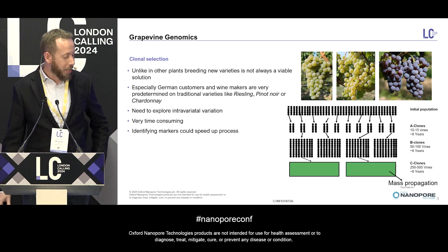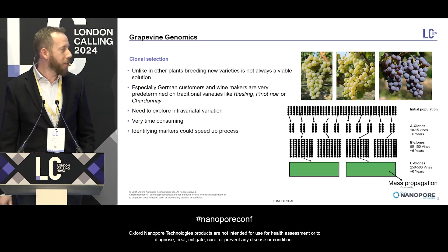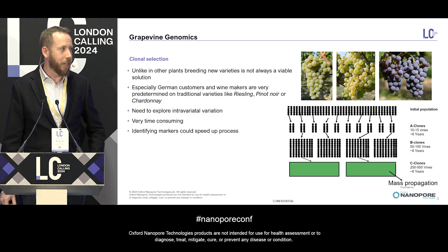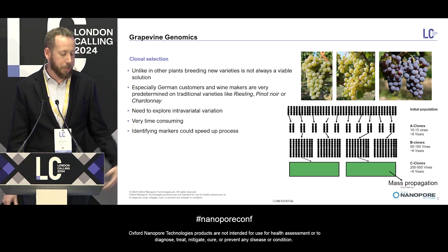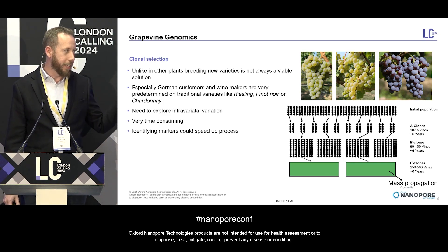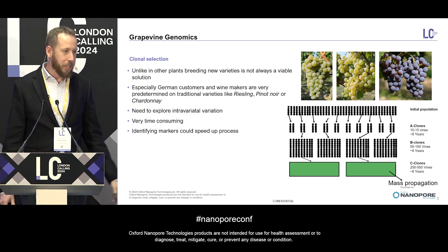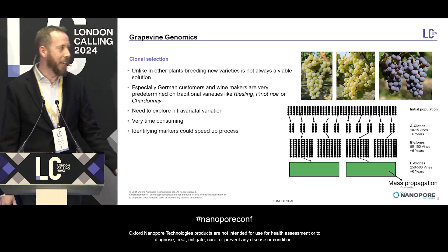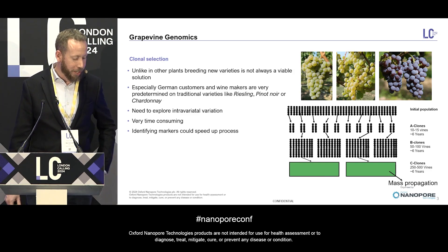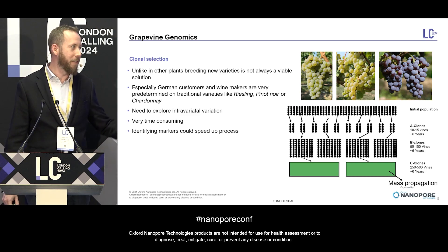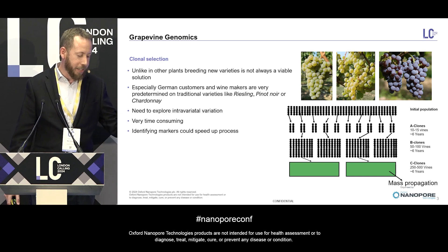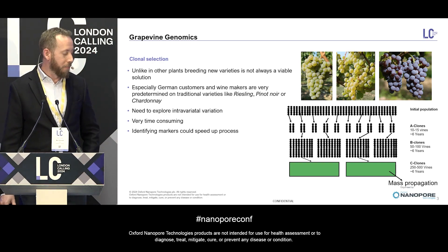We start with an initial population that has quite a lot of diversity. We select interesting clones with interesting phenotypes — like later bud burst, or later ripening, or cluster architecture differences. We propagate them for a few years, see how stable the phenotype is, then go into B clones, where we make more of them. We start making wine and realize it doesn't taste good, so we discard half. Some of them work. We finally make those into C clones, plant them in different fields and regions, and see if they work there. Then eventually we have a new grapevine clone.